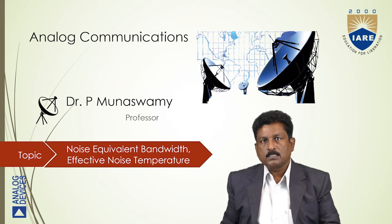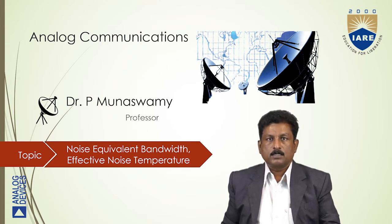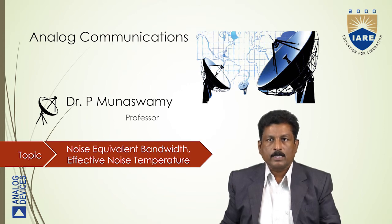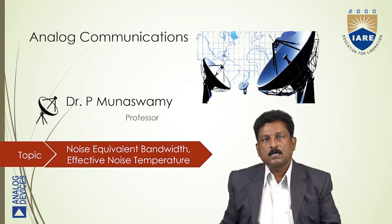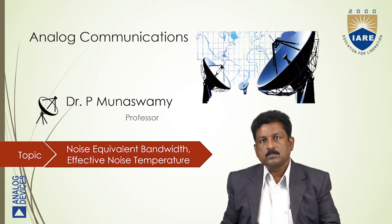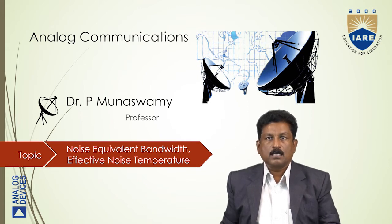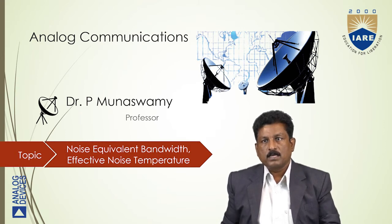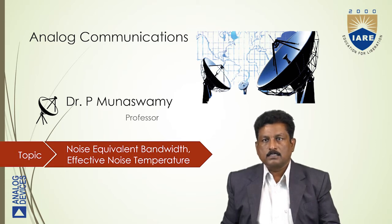Already from the last three classes we have discussed about the different types of noise — that is classification of noise, external noise, internal noise, and subcategories. We also covered how to calculate the noise figure for cascade and narrowband noise. Today we will see the noise equivalent bandwidth and effective noise temperature, which are two important parameters in the context of noise.